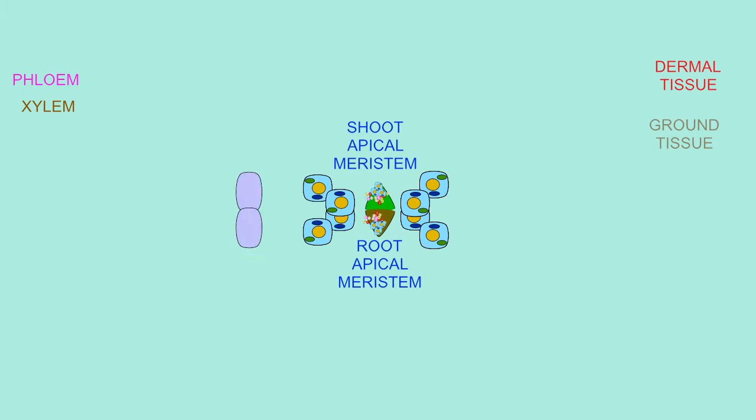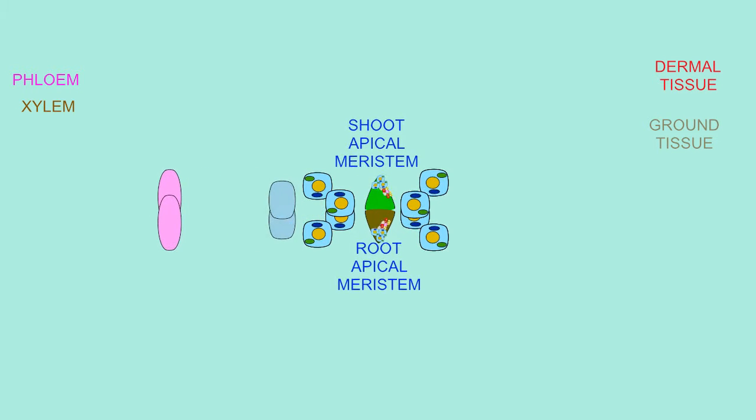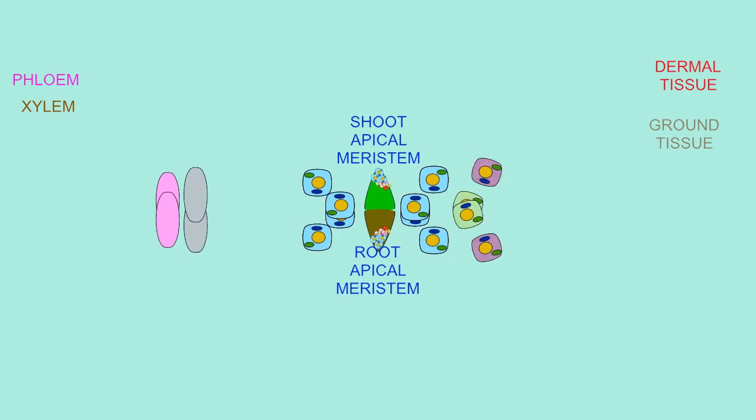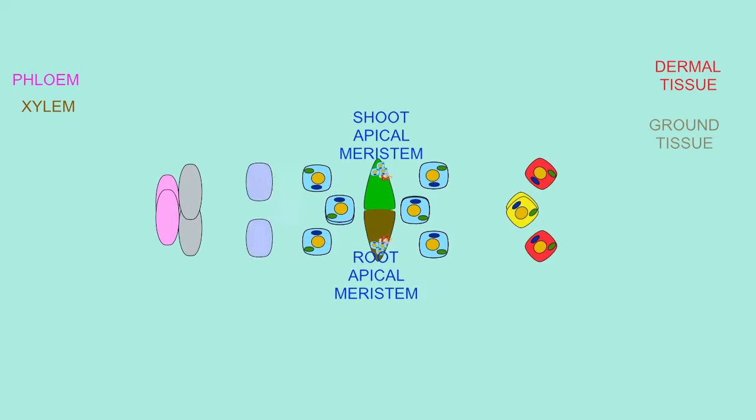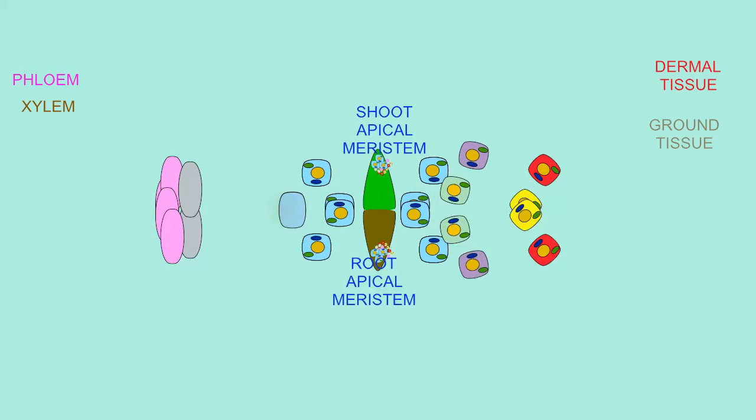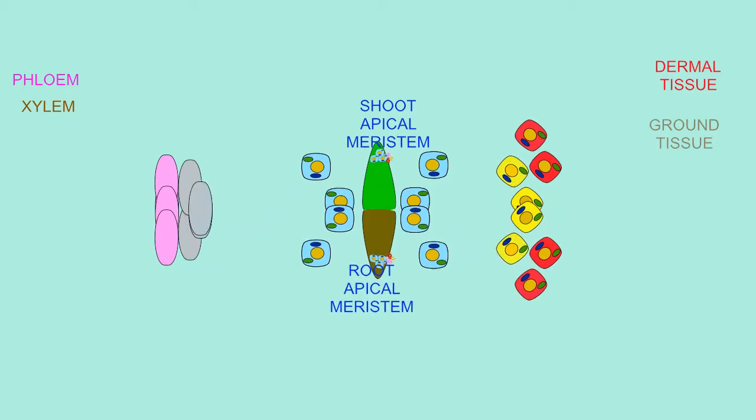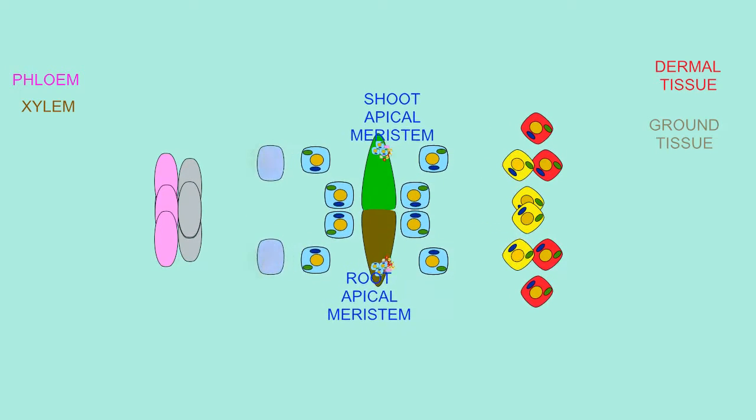Just as animals can possess stem cells, the undifferentiated cells which are capable of unlimited cell divisions, so too do plants. These cells are located in the meristems.